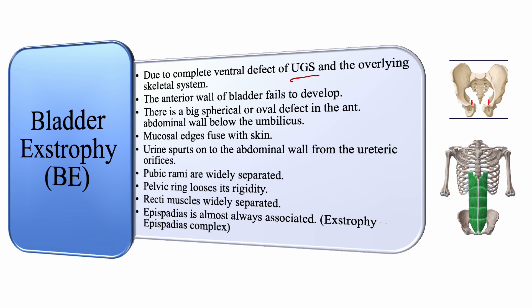There is a big spherical or oval defect in the anterior abdominal wall below the umbilicus, and the mucosal edges fuse with the skin. Urine spurts onto the abdominal wall from the ureteric orifices. The pubic rami are widely separated, the pelvic ring loses its rigidity, and the rectus muscles are widely separated. Epispadias is almost always associated with bladder exstrophy — this is also called the exstrophy-epispadias complex.